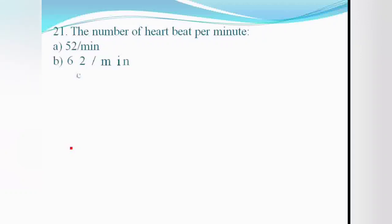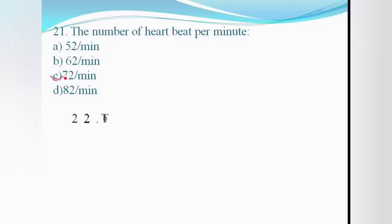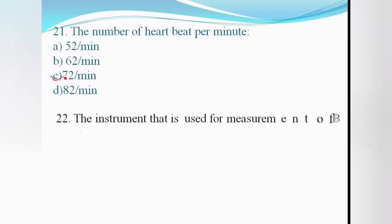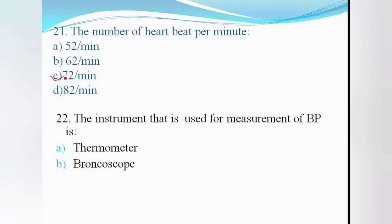The number of heartbeats per minute — the normal heartbeat rate is 72 per minute. Other options mentioned were 1.8, 20, and 20 per minute.